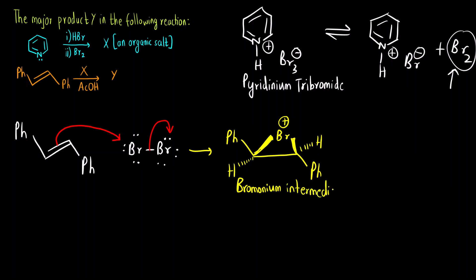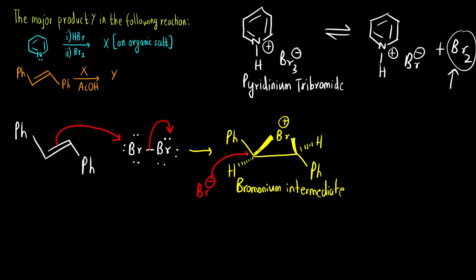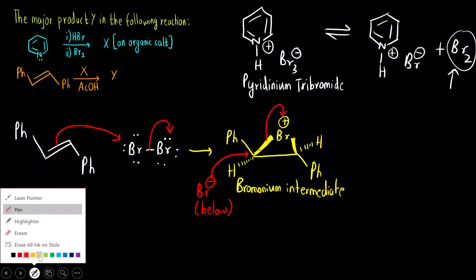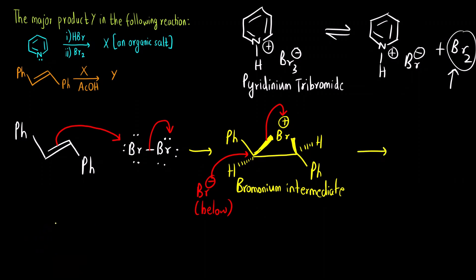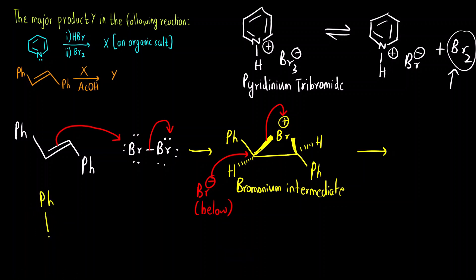Suppose the bromonium ring is formed above the plane, on the wedge bond. Br⁻ can attack from either side. If Br⁻ attacks from below the plane — since the ring is formed above — this is anti addition. The bond breaks and Br⁻ comes in from below the plane.